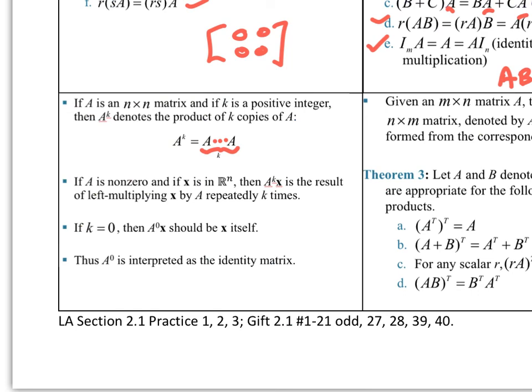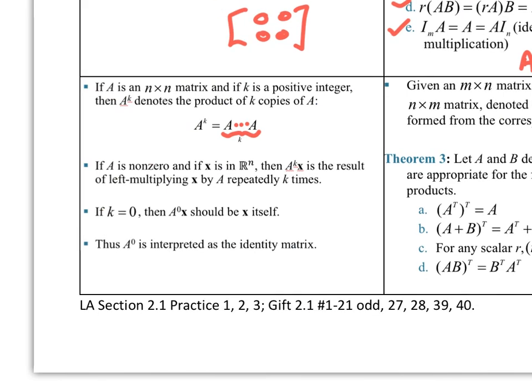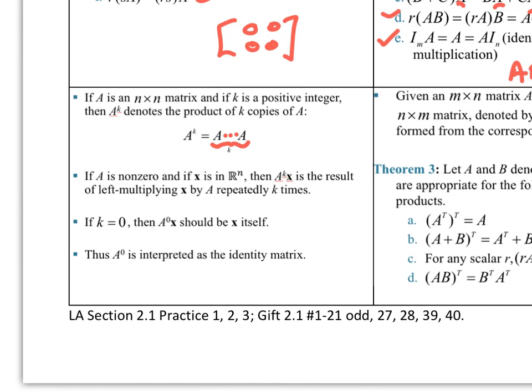These are kind of fun. Aᵏ means take matrix A and multiply by itself many times. It doesn't matter if you do these first then multiply, or those first then multiply—it works out. If A is non-zero and X is in ℝⁿ, then AᵏX is the result of left multiplying X by A repeatedly, K times. Keep that in order. A⁰ should be the identity—that's what we get for A⁰.